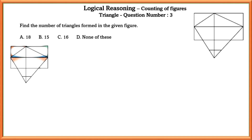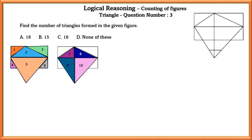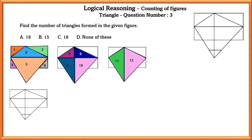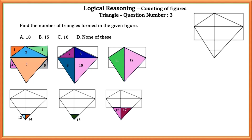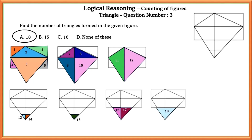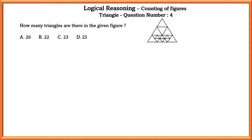Question number three: find the number of triangles formed in the given figure. We just count the triangles: 6 plus 4 plus 2 plus 2 plus 1 plus 2 plus 1, which equals 18 total triangles formed in the given figure.